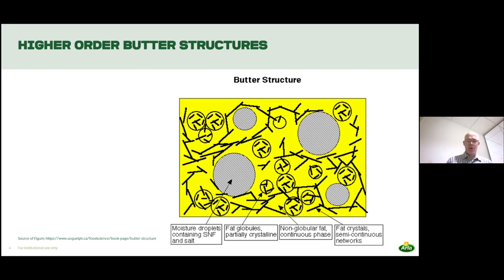Like this figure shows, I borrowed it from the web page of the University of Guelph, showing a schematic representation of butter structure, which contains both crystals and fat globules, and fat that is the continuous phase after phase conversion, and also droplets of water. So it's a very complex higher order structure that we have here.